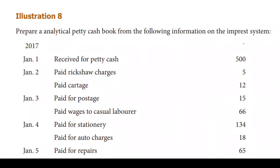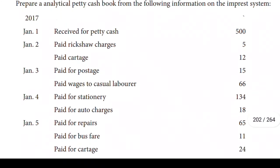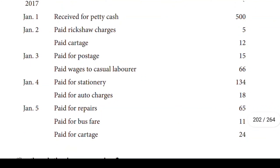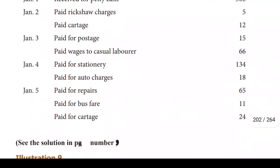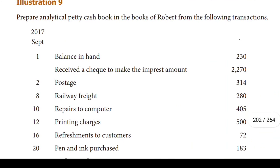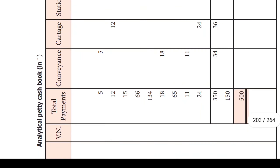But after you do the receipt side, if you have all your paid cash — pay taxes, for example — you buy Richard Charges, Cartage, Postage, Wages, Stationery, Auto Charges, Repair, Bus Fare, Cartage. These are the various expense items on the payment side.